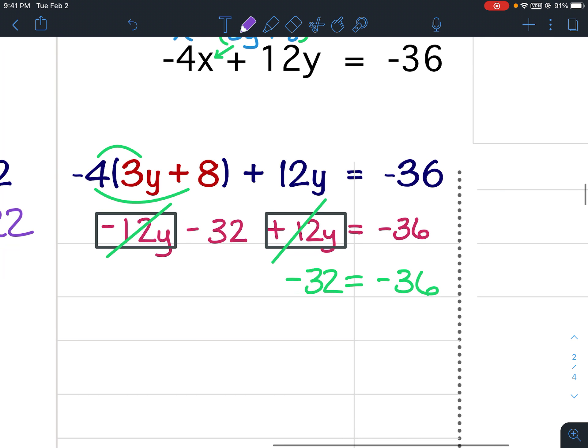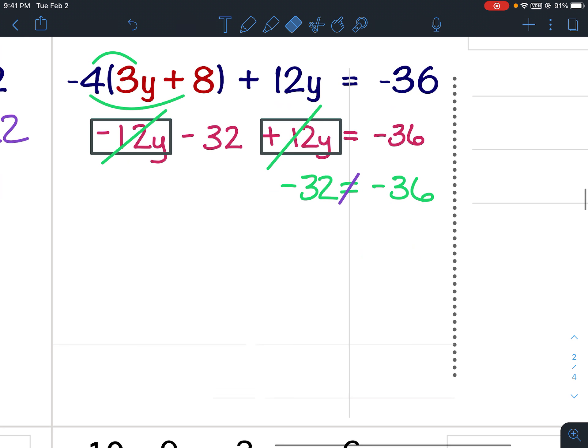Does negative 32 equal negative 36? No, it does not. So remember, when you have a problem where your variable terms cancel, you're looking for either no solution or infinitely many solutions, depending on what's left.